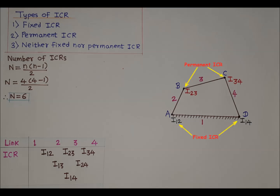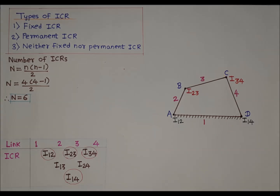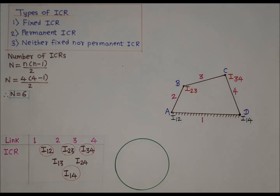ICRs which are neither fixed nor permanent are known as 'neither fixed nor permanent ICRs.' ICR i12 and i14 are fixed ICRs, while ICR i23 and i34 are permanent ICRs. We have located four ICRs — i12, i23, i34, and i14 — but there are six total. The remaining two ICRs, i13 and i24, are neither fixed nor permanent ICRs.